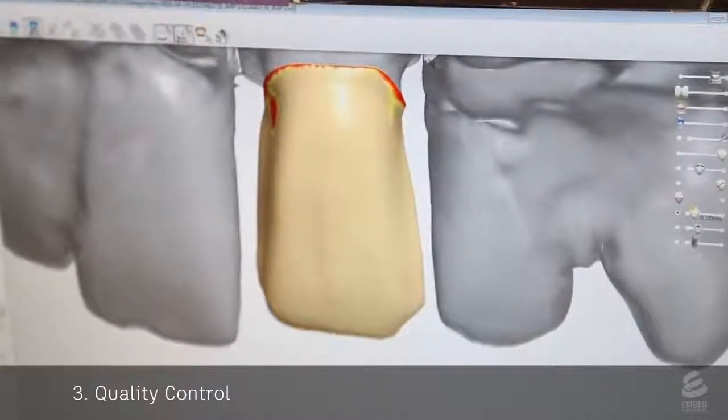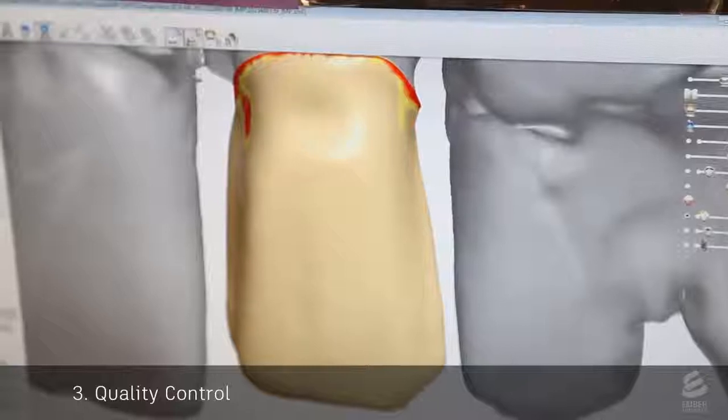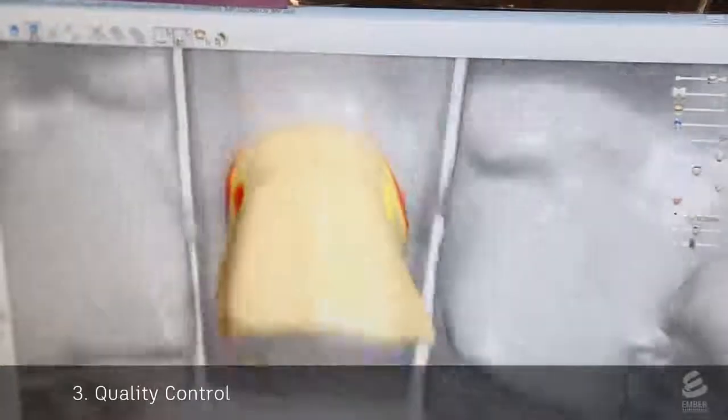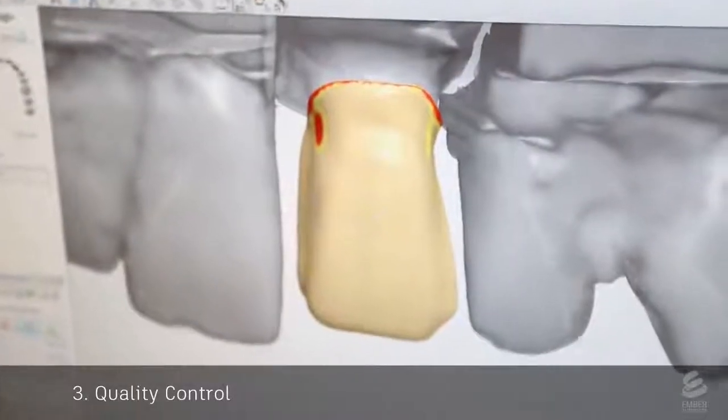This digital mesh is sent to a second technician who performs quality control. This is similar to the previous step, but this technician is more experienced and makes sure that the shape of the tooth looks natural.